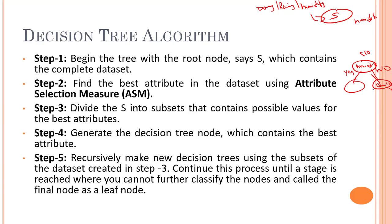We continue this process until a stage is reached where we cannot further classify the nodes — those final nodes are called leaf nodes. So we have the root node, then decision nodes, and if we cannot go further inside, the last nodes are the leaf nodes. For prediction, the algorithm starts from the root node, compares the root attribute value with the record from the real dataset, then follows the branch and jumps to the next node.